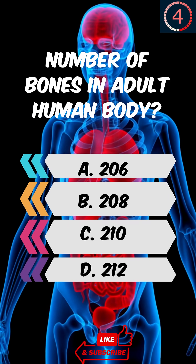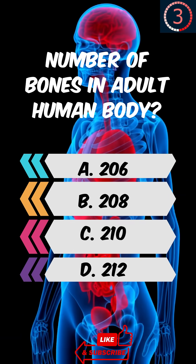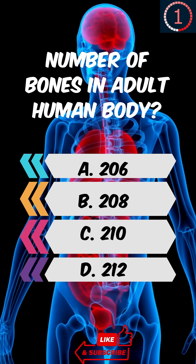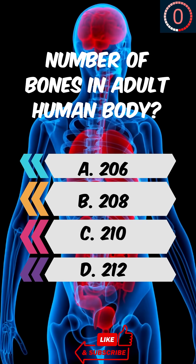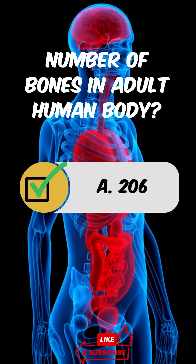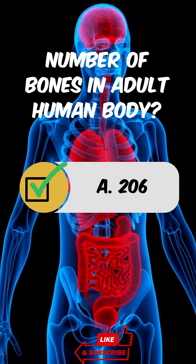Number of bones in adult human body? Answer is option A: 206.